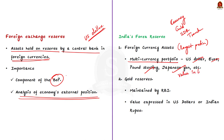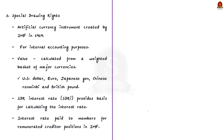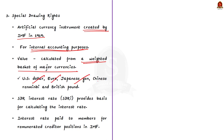Gold reserves are maintained by the RBI, and their value is expressed in US dollars or Indian rupees. Special Drawing Rights (SDR) are an artificial currency instrument created by the IMF in 1969, used for internal accounting purposes. The value of the SDR is calculated from a weighted basket of major currencies: US dollar, euro, Japanese yen, Chinese renminbi, and British pound. The SDR interest rate provides the basis for calculating the interest rate charged to member countries when they borrow from the IMF, and is also the interest rate paid to members for their credit positions in the IMF.